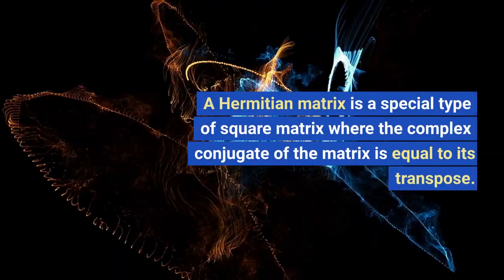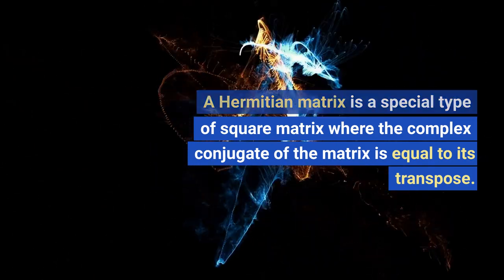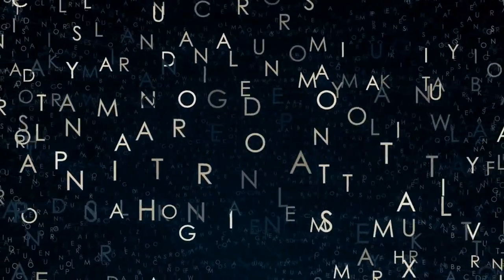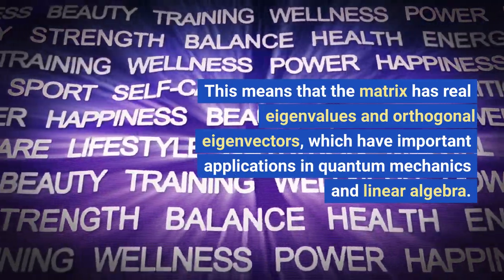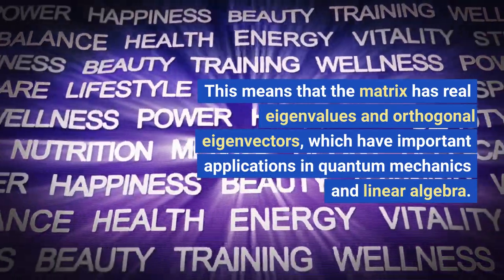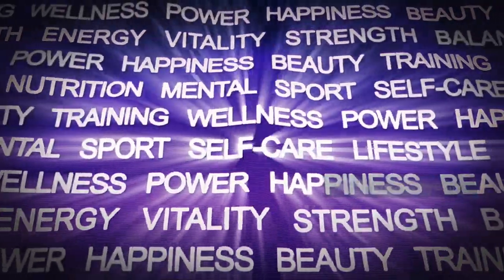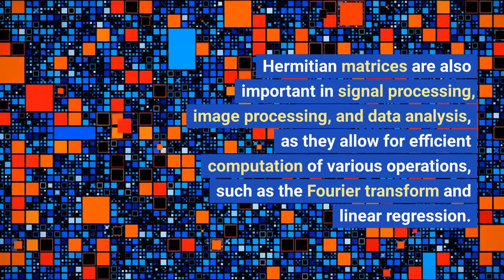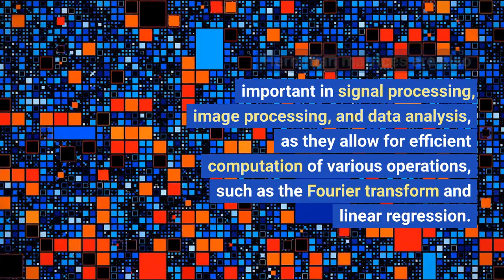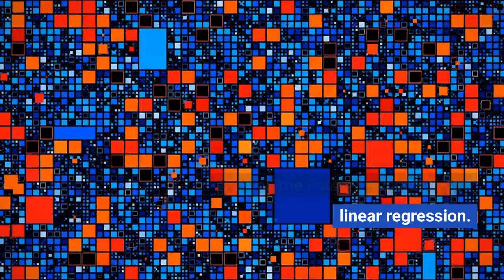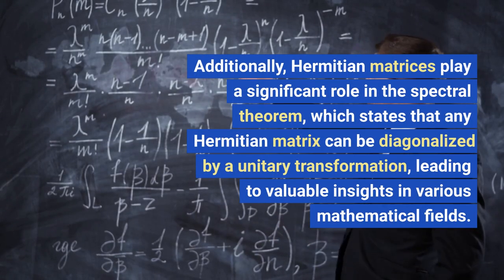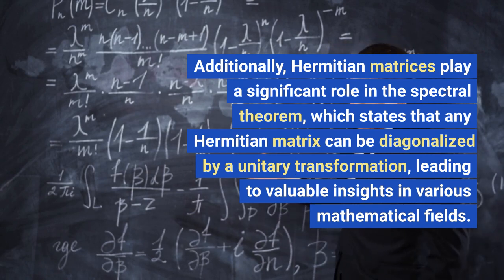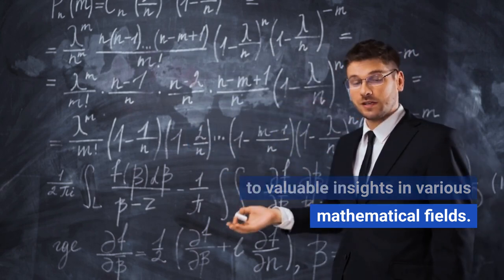A Hermitian matrix is a special type of square matrix where the complex conjugate of the matrix is equal to its transpose — in other words, the matrix is equal to its own conjugate transpose. This means the matrix has real eigenvalues and orthogonal eigenvectors, which have important applications in quantum mechanics and linear algebra. Hermitian matrices are also important in signal processing, image processing, and data analysis. Additionally, Hermitian matrices play a significant role in the spectral theorem, which states that any Hermitian matrix can be diagonalized by a unitary transformation, leading to valuable insights in various mathematical fields.